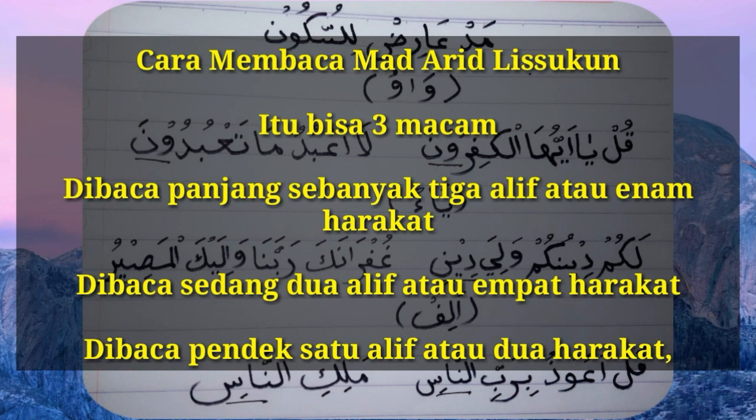Sekarang bagaimana cara membaca mad arid lissukun? Cara membaca mad arid lissukun itu bisa tiga macam. Yang kesatu bisa dibaca panjang sebanyak tiga alif atau enam harakat. Yang kedua bisa dibaca sedang atau dua alif seperti empat harakat. Dan yang ketiga bisa dibaca pendek satu alif atau sama dengan dua harakat. Yang lebih baiknya bisa dibaca sempurna sebanyak enam harakat.